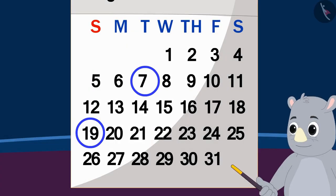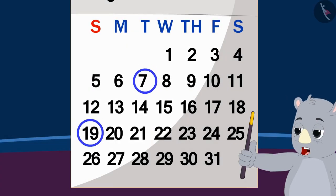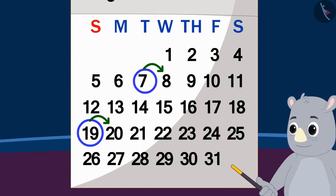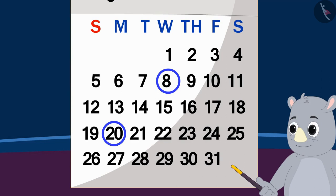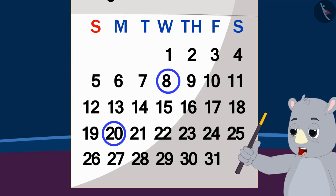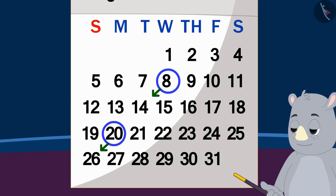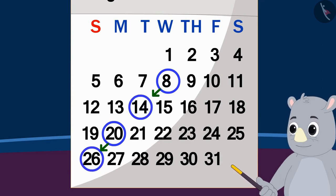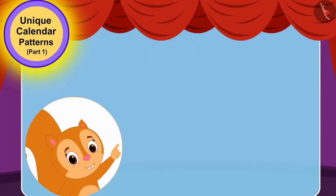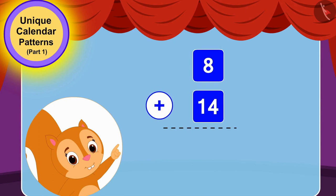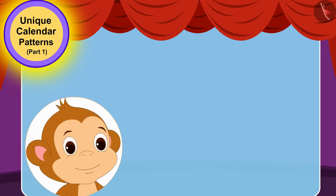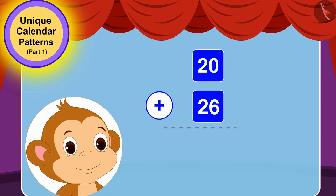Now Gagu told Chanda and Babban that they had to take the next date from their chosen date and add it with the number written diagonally in the backward direction. Chanda quickly added 8 and 14 and got the answer as 22 again. Babban too, by adding 26 to 20, got the number 46 again.